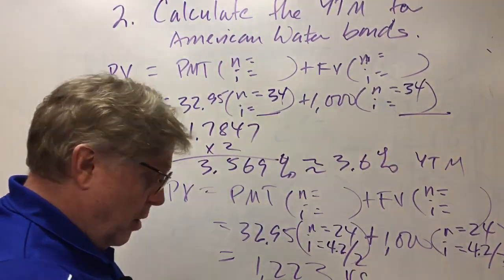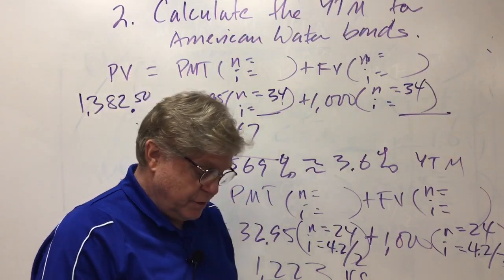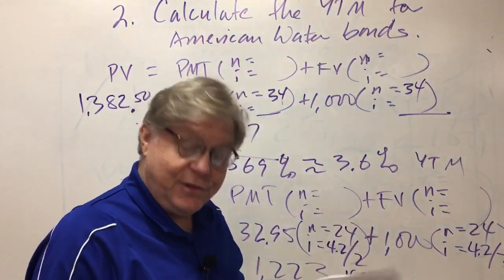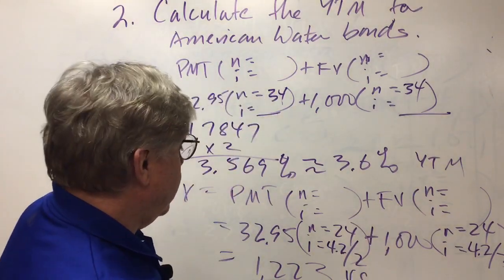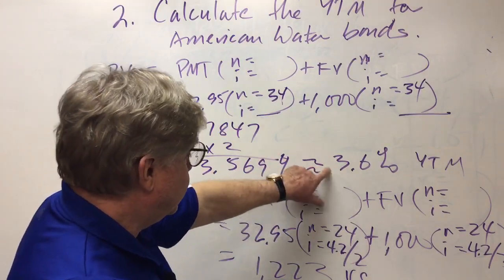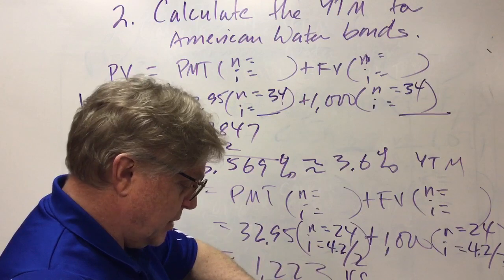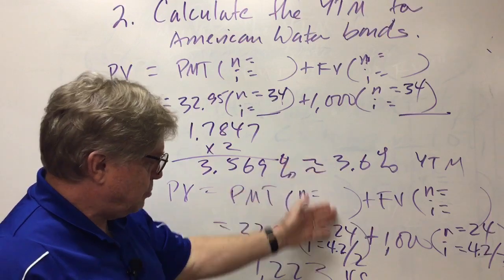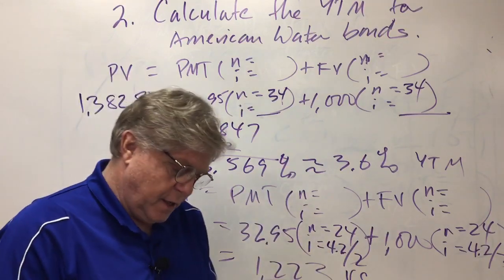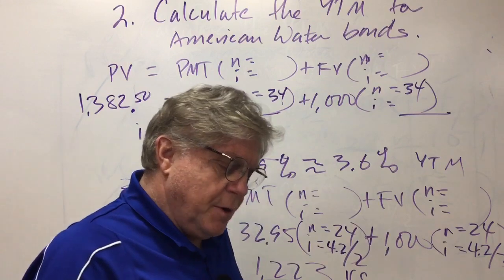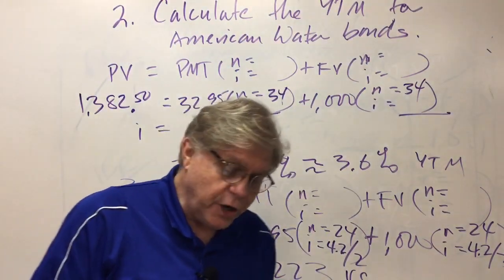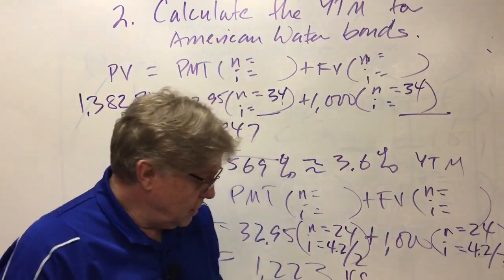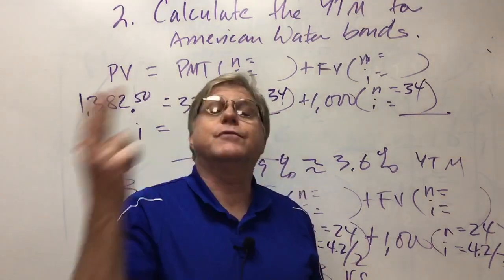That's the answer to number three. Number four says if in fact the bond's yield to maturity has changed from 3.6 percent to 4.2 percent, and I'm not sure that's what I said in your notes, I'll have to correct that. If it has changed in this way, the yield to maturity has gone up from 3.6 percent to 4.2 percent, it says refer to the three determinants of rates of return from an earlier chapter and explain what could have happened to produce that change in the yield to maturity.